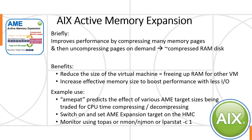Let's do a one minute reminder of Active Memory Expansion. It improves performance by compressing many memory pages, then uncompressing them on the fly, on demand as applications use those pages. You can think of it as a compressed RAM disk if that helps. Two benefits: you can either reduce the size of your virtual machine, freeing up memory for other uses in other virtual machines, or you can increase the effective size of your virtual machine, boosting performance by doing less I/O to get the data to your applications.